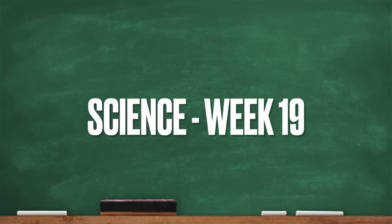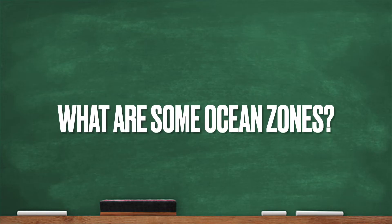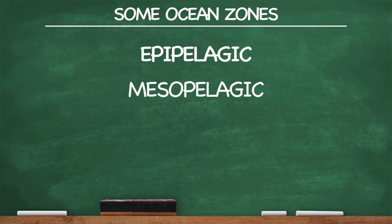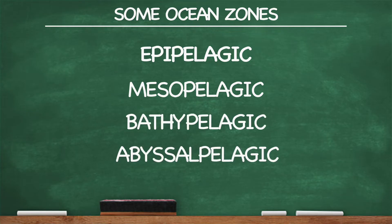All right, ocean science! What are some ocean zones? These are some weird words — they got the word pelagic at the end of each of them, so get ready. Follow along on the guide as we go through. Here we go. What are some ocean zones? Epipelagic, Mesopelagic, Bathopelagic, and Abyssal Pelagic.